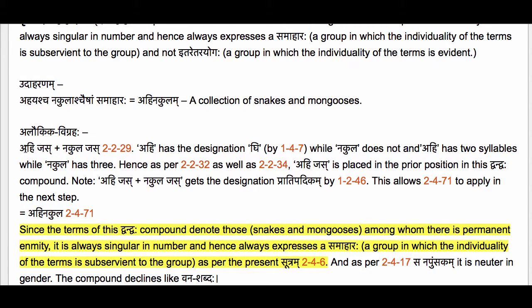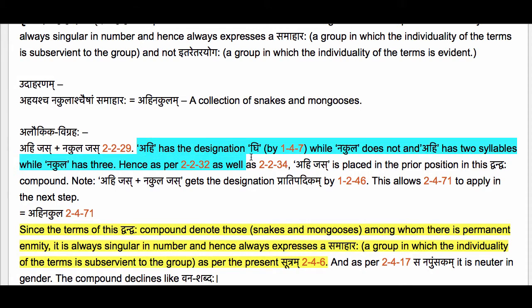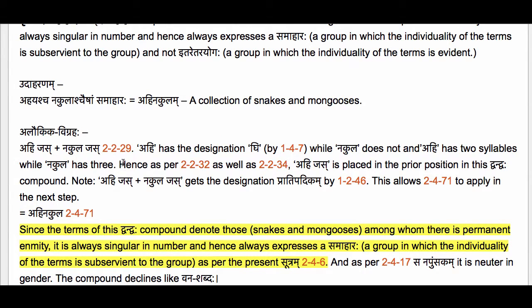The alaukika vigraha is Ahijas plus Nakulajas, with compounding authorized by Sutram 2-2-29 and 2-4-2. Now Ahi has the designation Ghi by Sutram 1-4-7 Shesho Ghyasakhi, while Nakula does not. Additionally, Ahi has two syllables while Nakula has three syllables — Ahi has fewer syllables than Nakula. Hence, as per Sutram 2-2-32 Dvandve Ghi and 2-2-34 Alpach Taram, Ahijas is placed in the prior position in this Dvandva compound.